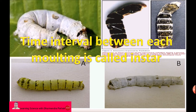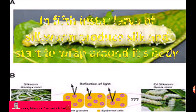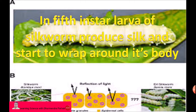The time interval between each molting is called an instar. This means five instars are found in the larval stage of the silkworm. In the fifth instar, the larva produces silk thread and starts to wrap it around its body, coiling in leaves.